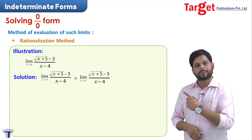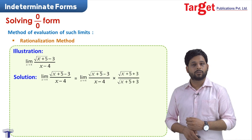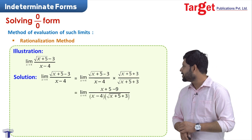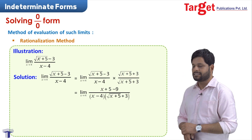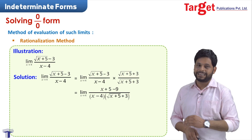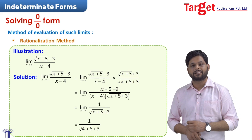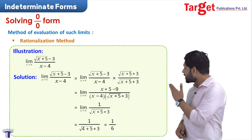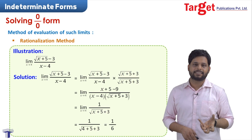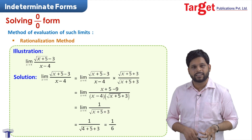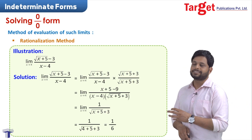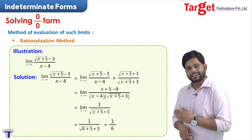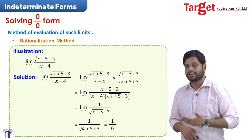Wherever we have a square root, we can use the rationalization method. We rationalize the numerator by multiplying and dividing by the conjugate, as we normally do in rationalization. After rationalization, we substitute the limits and the cancellation is done — in the numerator and denominator, x minus 4 cancels. Then we substitute x equal to 4 in the remaining function, and the answer is 1 by 6.